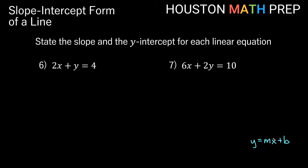We don't have y equals like we have in y equals mx plus b. So we'll need to get y by itself first. To get rid of this x term entirely, we'll subtract 2x to the other side.